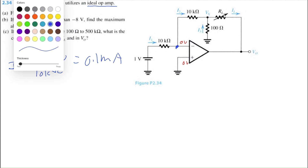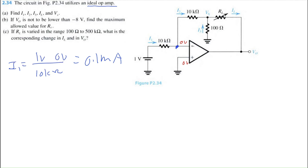Now, what's the value of I2? We use another principle of ideal op-amps: infinite input impedance. That means the resistance going into both the positive and negative terminals is infinite, so zero current flows into those terminals. Therefore, all of the current I1 traveling into this node continues through, and I2 equals I1, which is 0.1 milli-amps.